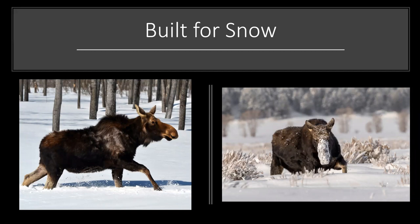Heat regulation is really important for moose. They are built for ambient temperatures of about 23 degrees Fahrenheit in the winter and no more than 57 degrees Fahrenheit in the summer. Anything beyond those temperatures is really stressful and discomforting for them. You might see them panting with their mouth open, like a dog. They might move into deeper valleys and draws, sprawl out in their sleep, and there's even speculation that their foraging in water is another way they regulate their heat.